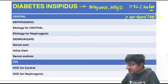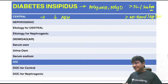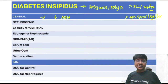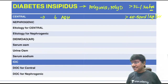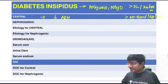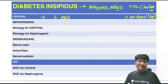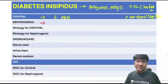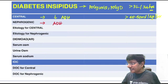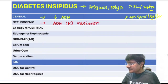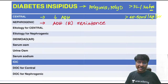Central diabetes insipidus means there is complete deficiency of antidiuretic hormone. In nephrogenic diabetes insipidus, ADH is present in adequate quantities, but there is ADH receptor resistance.